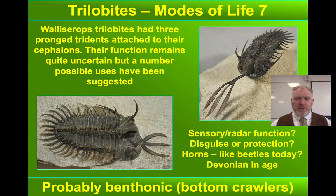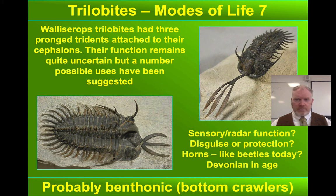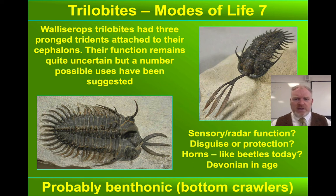And then there are some like Walliserops, one of the Moroccan trilobites, with quite a spectacular array of spines — and this trident hooking well out in front of its cephalon. What do you think this could have been used for? It seems unlikely to be used for defence. Was it sensory? Was it used for protection? Was it a horn like a beetle today? This animal did have eyes — is it just a display to attract mates? Who knows? It's probably benthonic and crawled along the seabed, but it's an interesting one.